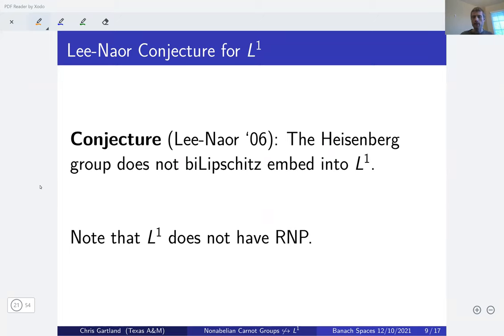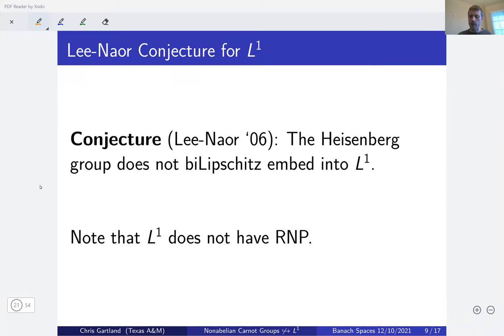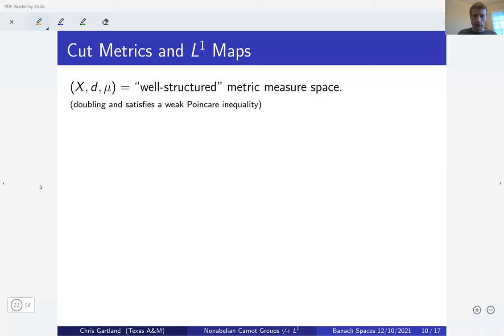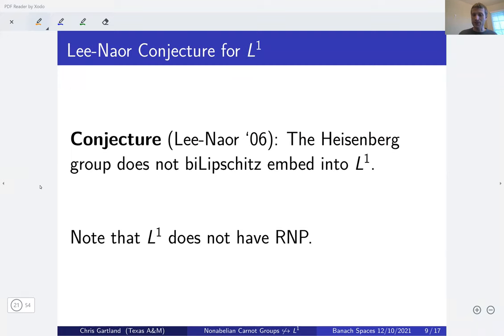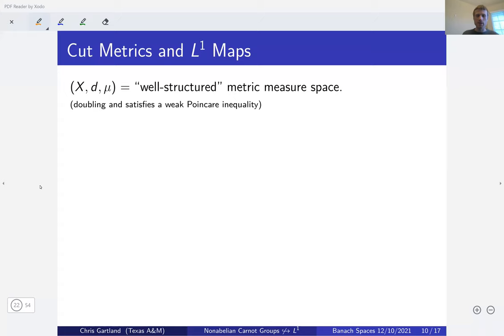Now, what about targets that don't have RNP, like L¹? There are important applications of embeddability of metric spaces into L¹ coming from theoretical computer science. It was conjectured by Lee-Naor that the Heisenberg group does not bi-Lipschitz embed into L¹ — we can't apply the previous theorem since L¹ lacks RNP. They were thinking about this because of the computer science applications. The answer is no, the Heisenberg group doesn't embed into L¹, and it was proven by Cheeger and Kleiner.